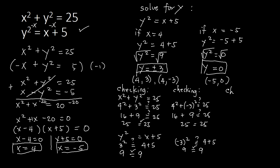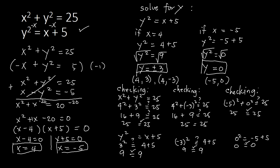Checking point (negative 5, 0) in the first equation: negative 5 squared plus 0 squared equals 25 plus 0, which is 25 — correct. In the second equation: 0 squared equals negative 5 plus 5, so 0 equals 0 — correct. All three points are verified as solutions to our system.